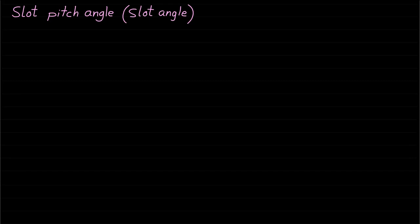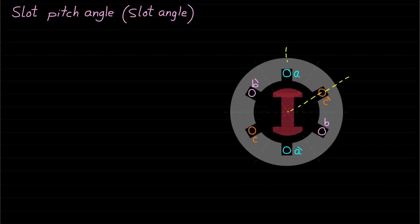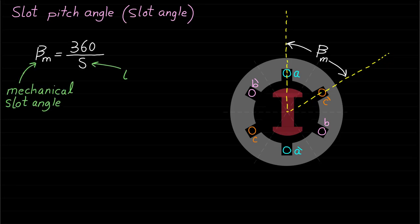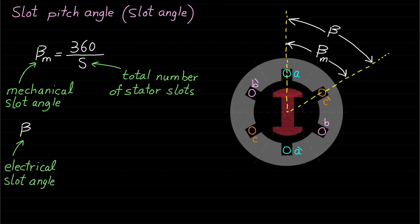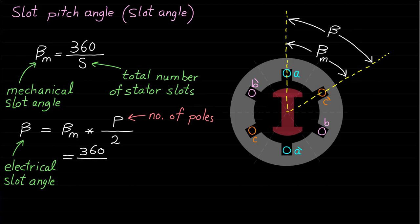Now let's learn the term slot pitch angle or slot angle. The slot angle is defined as the mechanical angle between two adjacent slots, denoted by β_M, and equals 360 divided by the total number of stator slots. The slot angle can also be represented as an electrical angle β, calculated by multiplying β_M by the number of poles over two. So the electrical angle β equals 180 divided by slots per pole. The electrical angle equals the mechanical angle only in the case of a two-pole machine.